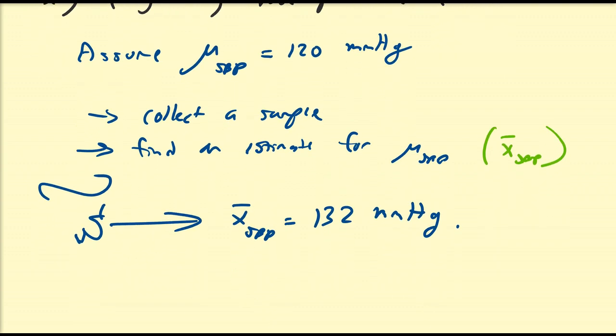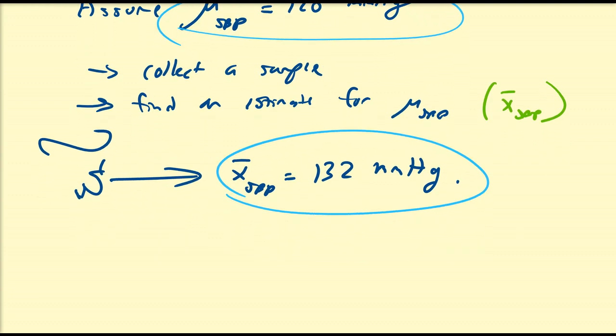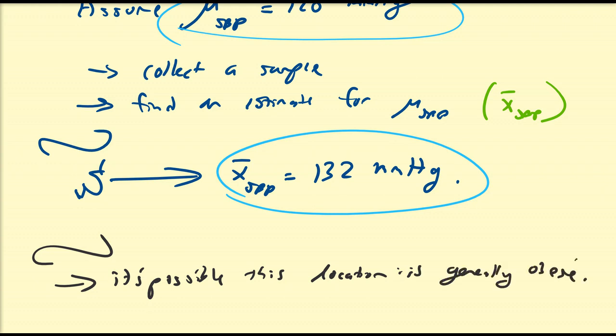We have this statistic, and we're estimating this parameter. Based on this comparison, what can we possibly say about the sample, whether it be your neighborhood or school? This info provides possibly, it's possible this sample, this location is overweight, generally obese. Maybe. That's a question mark. It's not a true fact.